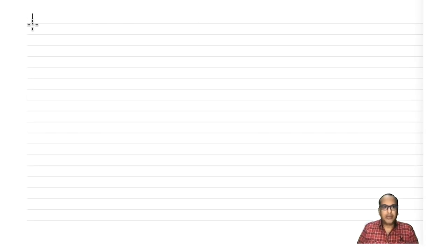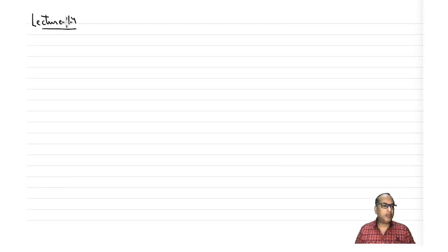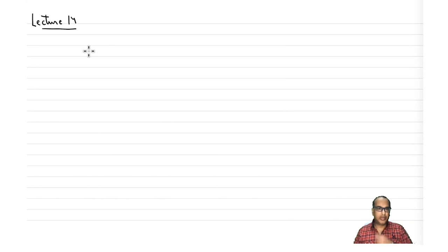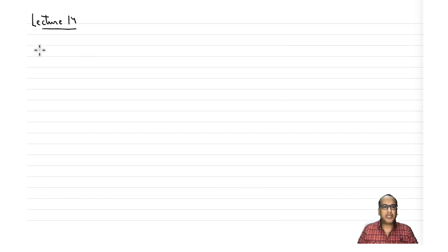Welcome back everyone. We have seen last lecture how to write group multiplication tables, and we have also seen the detailed properties of groups using some solved examples. Let us now see how a group can be divided into smaller subgroups.